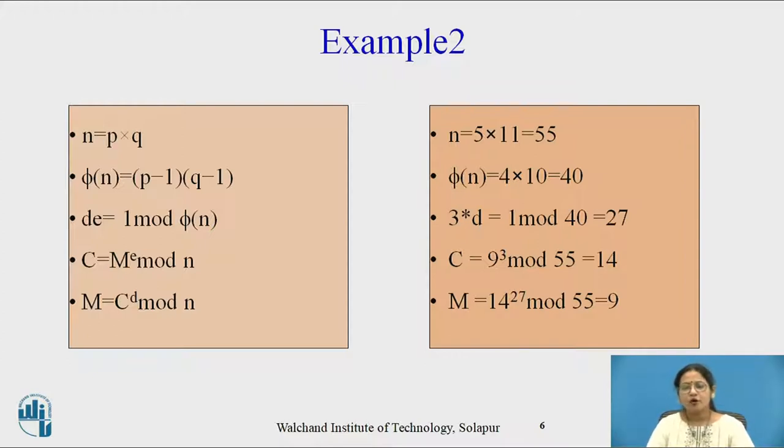Again by performing calculations, by doing trial and error, by applying theorems, we are able to determine d equals 27. Time to compute ciphertext: 9 raised to 3, where 9 is our message, mod 55. By calculating we get 14. And m equals 14 raised to 27 mod 55, giving original plaintext 9. Hope you solve these two.